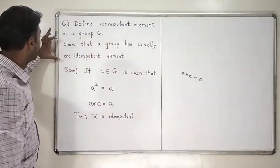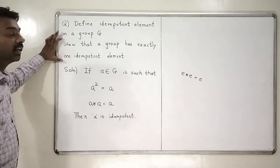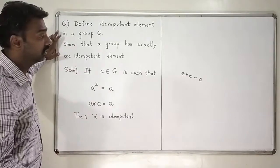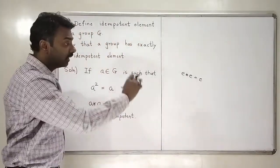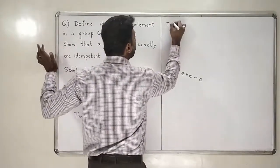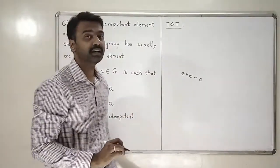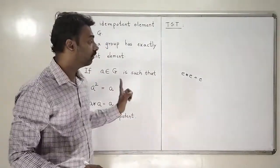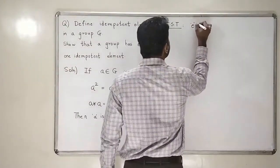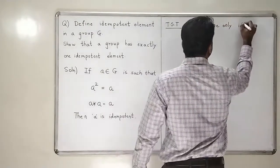But this exercise in the next part tells us that we have to show that the group contains exactly one idempotent element. And who is that one idempotent element? We know that identity satisfies this property. So, identity is already idempotent. We have to show that identity is the only idempotent element. There is no other element which will satisfy this property. To show that identity is the only idempotent element.